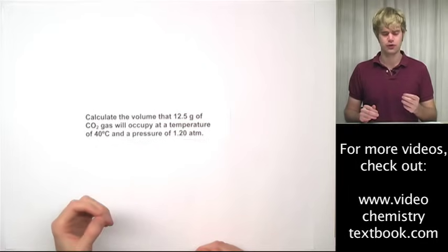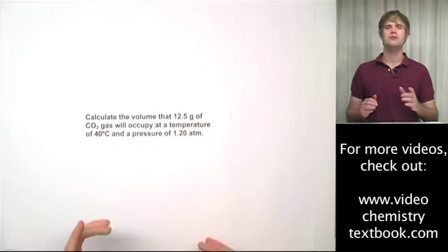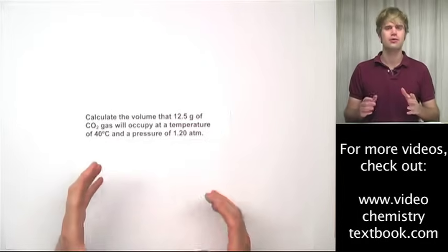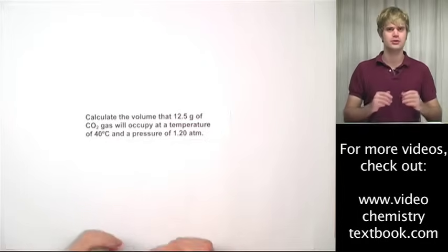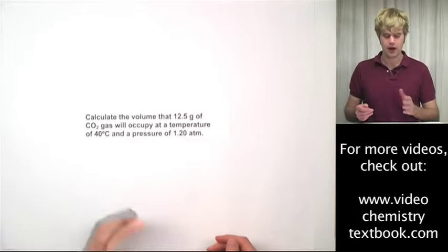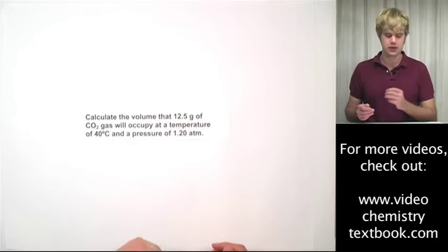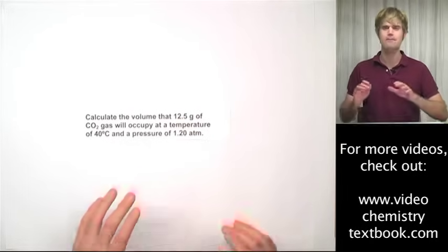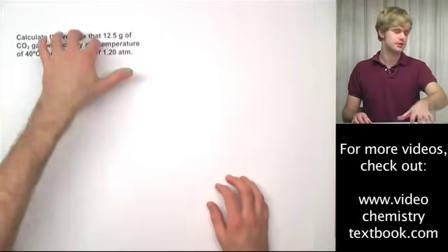Now we're going to look at some ideal gas law problems where we also have to use molar mass to convert between grams and moles of a gas. Take this problem for instance. Calculate the volume that 12.5 grams of CO2 gas will occupy at a temperature of 40 degrees Celsius and a pressure of 1.0 atm.